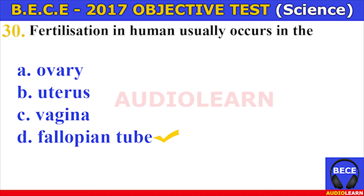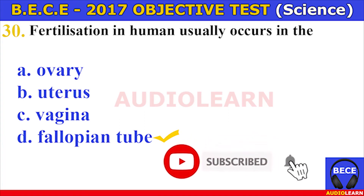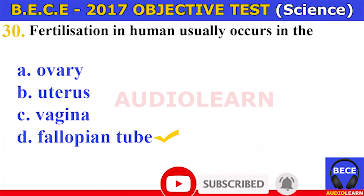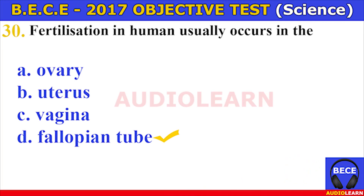Number twenty-nine. Movement of the ribs is brought about by the A. Pleural cavity, B. Intercostal muscles, C. Larynx, D. Trachea. The answer is B. Intercostal muscles. Number thirty. Fertilization in humans usually occurs in the A. Ovary, B. Uterus, C. Vagina, D. Fallopian tube. The answer is D. Fallopian tube. Fertilization in humans usually occurs in the fallopian tube.